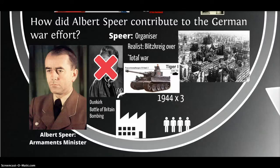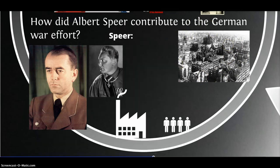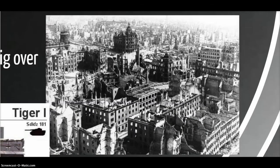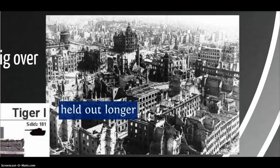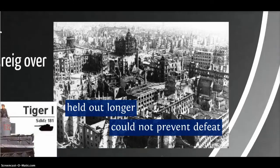Speer's reorganisation was extraordinarily successful. By 1943, German armaments production had tripled — achieved partly by concentrating production in gigantic factories and making use of slave labour. But ultimately, even with these extra gains in production, it couldn't possibly match the industrial production of the Allies, and the effect of bombing was having a significant impact on German industrial production. Overall, Speer's contributions allowed the Germans to hold out longer — without him they probably would have collapsed far sooner — however it simply delayed the inevitable and could not prevent defeat.